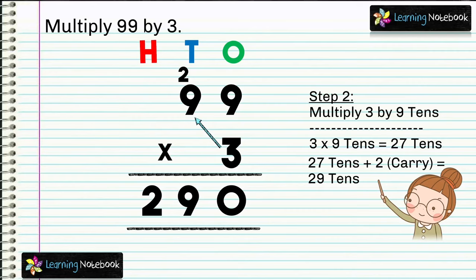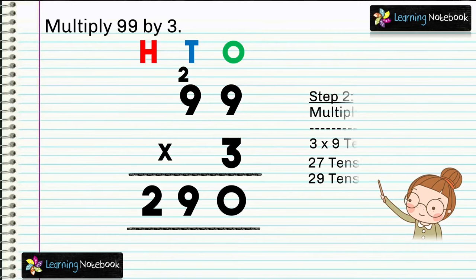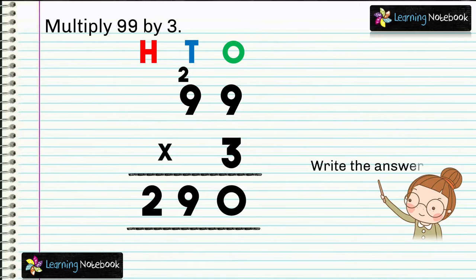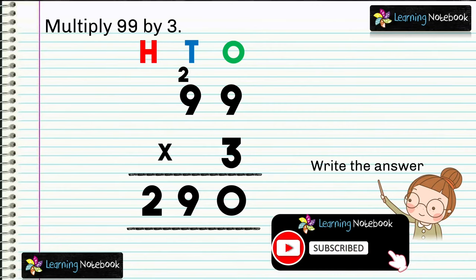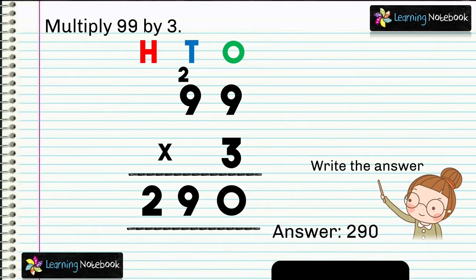Our answer is 99 into 3 equals 297. So this is how we do multiplication of a two-digit number by a one-digit number, without or with regrouping.